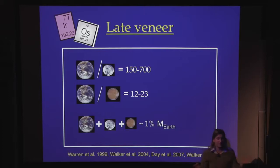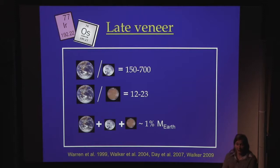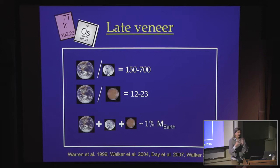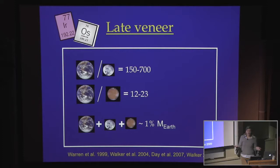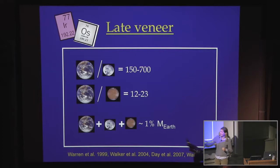If these elements had been accreted to the Earth before the core had formed — before the last giant impact — all this material would have ended up in the core because they love to hang out with iron. However, the fact that we find them in the Earth's mantle is interpreted as meaning this material was delivered to the Earth after core formation finished — after the last giant impact. Examples of these highly siderophile elements are iridium and osmium. You can measure their abundance in the Earth's mantle, calculate how much material that is, and find it's about 1% of the mass of the Earth inferred to have been accreted after the Moon-forming impact.